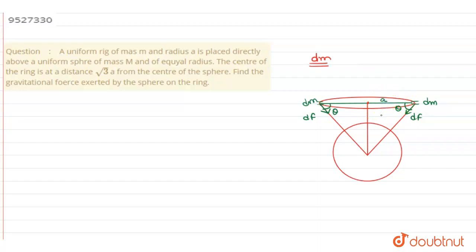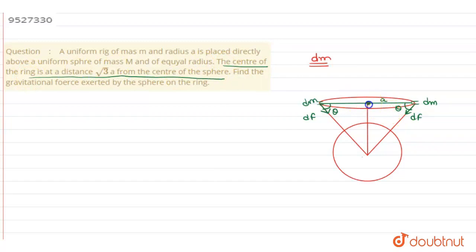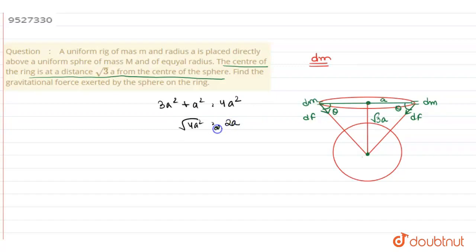I consider this angle as a. So if this angle is a, the distance will be 2a — because the ring is placed directly over the sphere. But the problem states the center of the ring is at root 3a from the center of the sphere, and the radius is a. So applying the Pythagoras theorem: 3a² + a² = 4a², so the distance is root(4a²) = 2a.